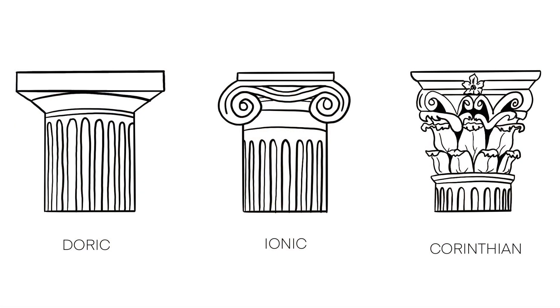The origins of classical architecture can be traced back to ancient Greece, where the Doric, Ionic, and Corinthian orders were developed. These orders served as the basis for the construction of temples, civic buildings, and other monumental structures.